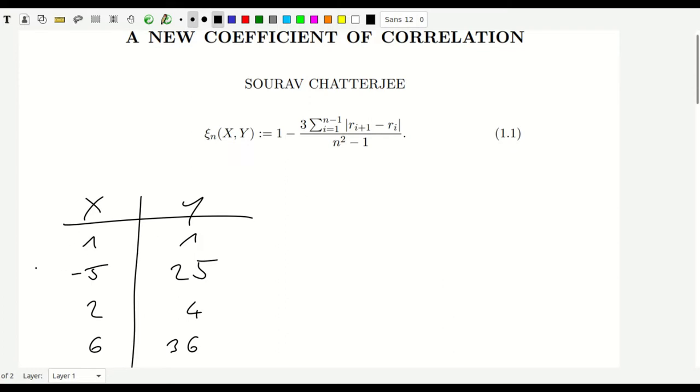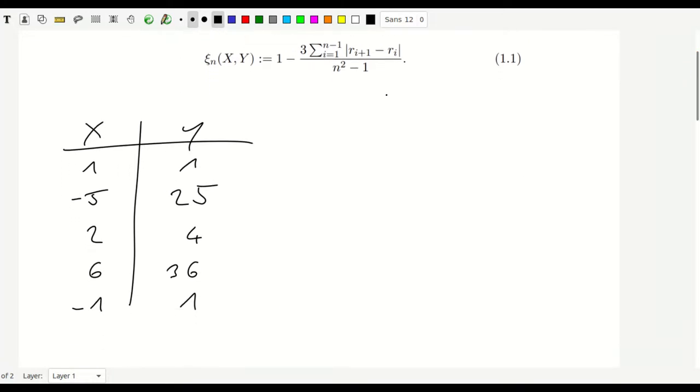And the idea is that if we have small changes of x and y depends on x, then we should also have somewhat small changes of y. Because if y depends on x and x changes only a little, then y should also change not too much. But I think it'll become more clear if we look into this toy example.